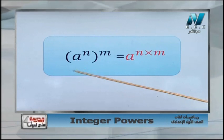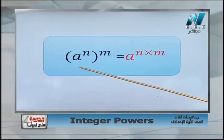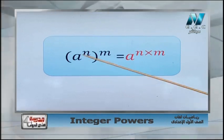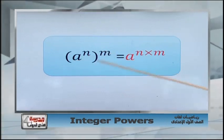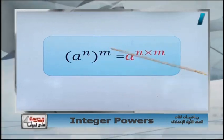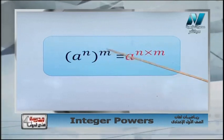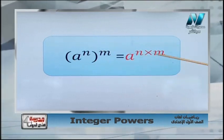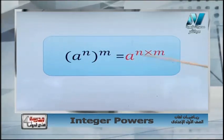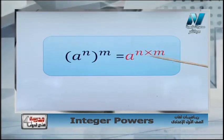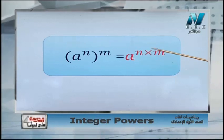So our new rule today is: if we have a to the power n, all to the power of m — power of the power — we multiply them. It equals a to the power of n times m.